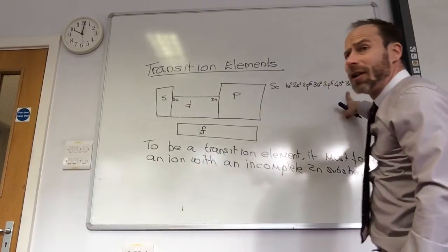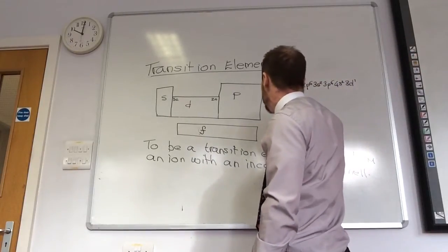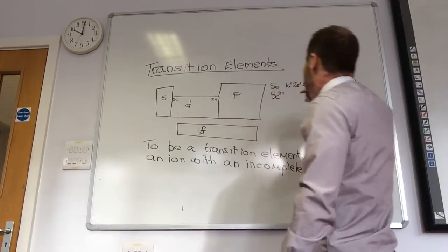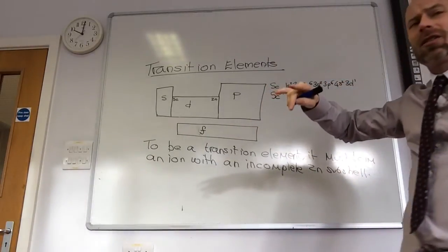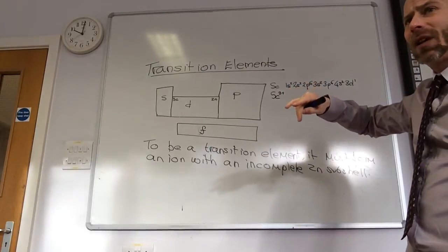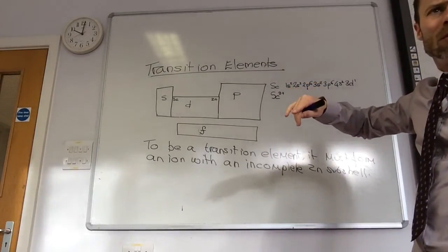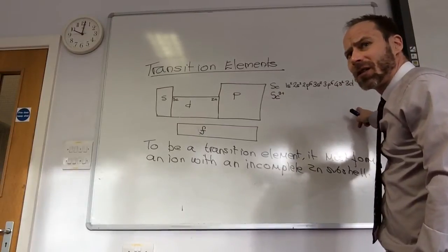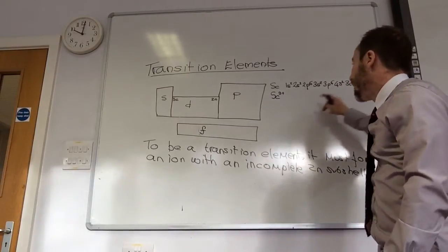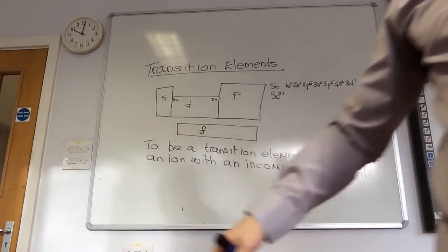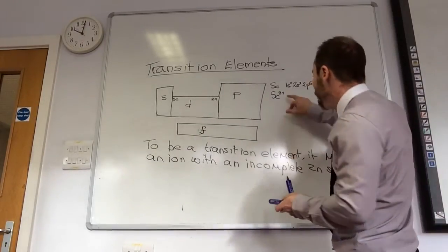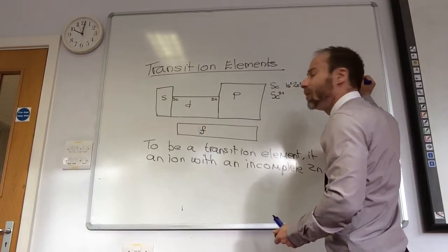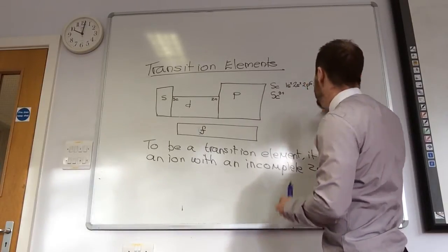Scandium only forms Scandium 3+. When I'm forming ions of a D-block element, I remove the electrons from the 4s orbital first. It doesn't matter in this case, but I'm going to remove, to form Scandium 3+, I've got to remove the 4s2 and the 3d1.